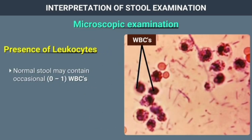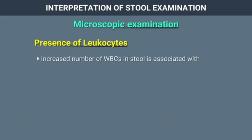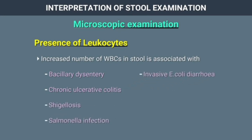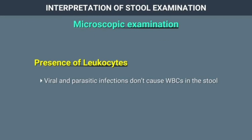Presence of leucocytes: Normal stool may contain occasional white blood cells. To look for white blood cells, the smear must be prepared from the area of mucus or from watery stool. Increased numbers of white blood cells are associated with bacillary dysentery, chronic ulcerative colitis, shigellosis, salmonella infection, E. coli diarrhea, fistula of anus or rectum, localized abscess, and sometimes amoebiasis and typhoid. Viral and parasitic infections do not cause white blood cells in the stool.